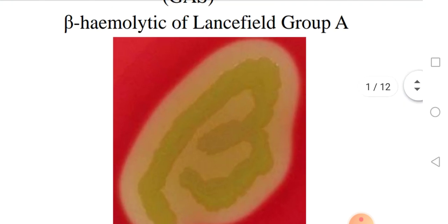Beta hemolysis means complete hemolysis — complete clearing of the blood around the growth in blood agar.